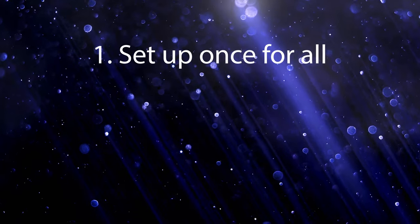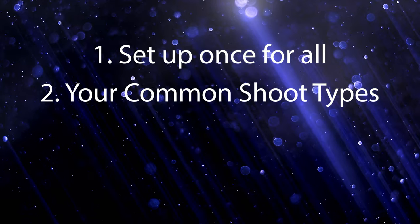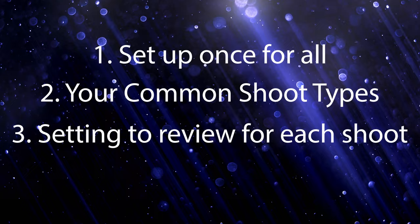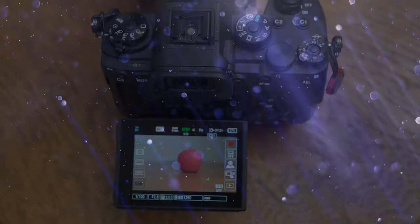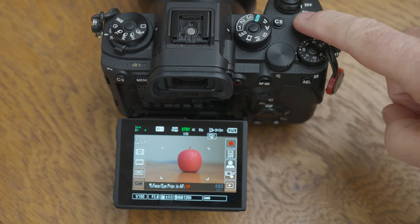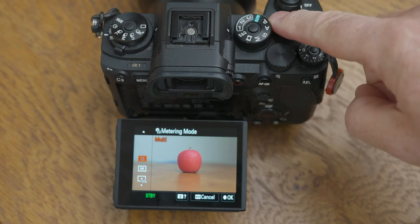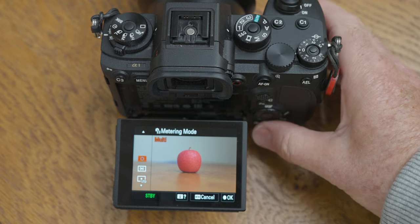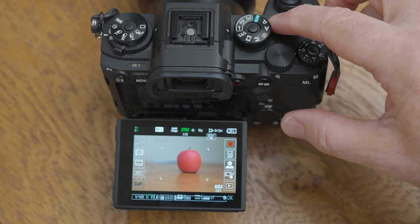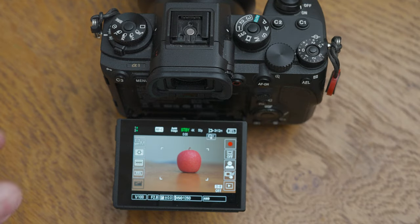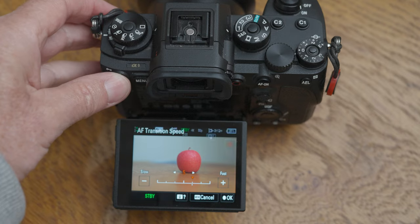So far we've talked about settings that are permanent, settings for a shooting scenario, and settings to review at the start of the shoot. Finally, there are the custom buttons you can see on the camera here. I've got custom buttons C1, C2, C3, and on the back C4. In addition, I have a scroll wheel with a button in the middle, and I can also make use of the scroll wheel buttons — left, right, up, and down. These are vital settings that you may need to change on the fly while you're shooting.